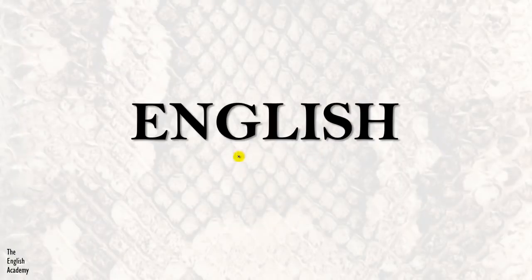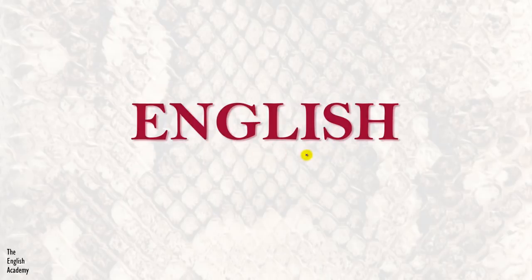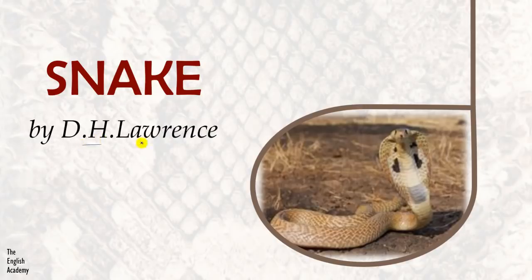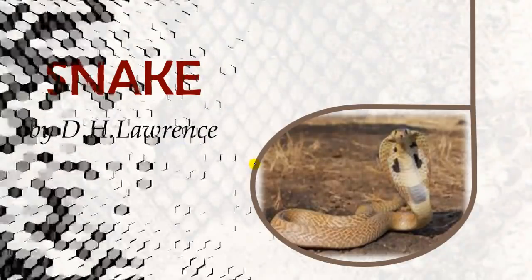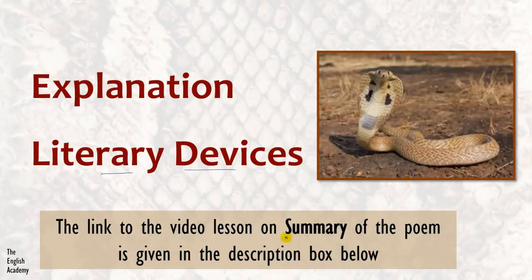Hello everyone, I welcome you to this English class. Here we are studying this poem for students of class 10th. The name of the poem is Snake, written by D.H. Lawrence, and I am Ruchika Gupta. We will cover the explanation of the poem and the literary devices used in it. If you want to see the summary and the background of Snake, it is a separate video and the link is given in the description box below.